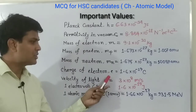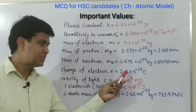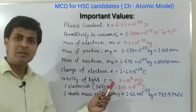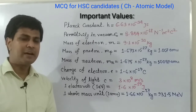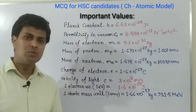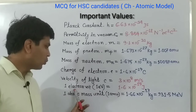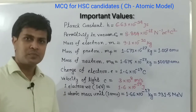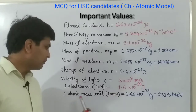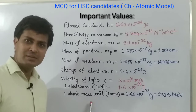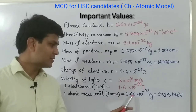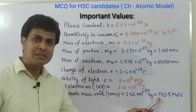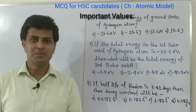The charge of electron e equals to 1.6 into 10 to the power minus 19 coulomb. The velocity of light c is constant at 3 into 10 to the power 8 meter per second. 1 electron volt equals to 1.6 into 10 to the power minus 19 joule. The full form of AMU is atomic mass unit, and 1 atomic mass unit equals to 1.66 into 10 to the power minus 27 kg, or 931.5 MeV. Now let's solve some MCQ questions.